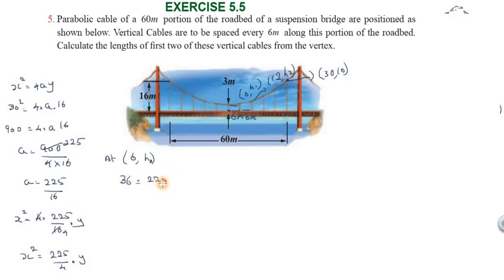So h1 equal to 36 into 4 by 225. 36 into 4 equals 144, so 144 by 225. When we divide, h1 equal to 0.64.